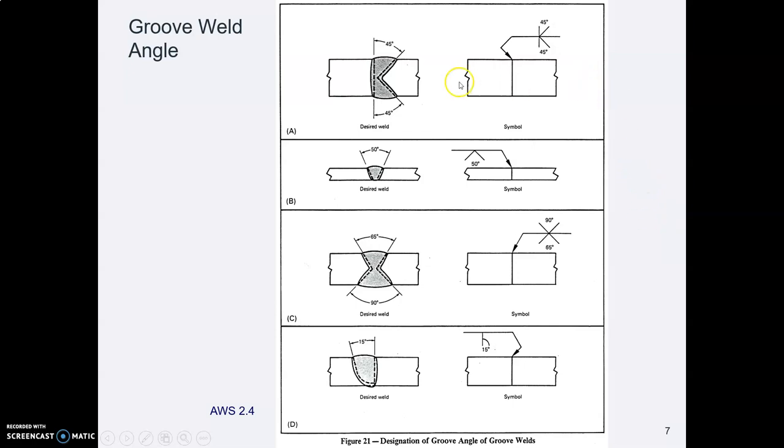Finally the angle. So the angle is in between the two plates and therefore the angle callout is in the middle of the weld symbol. Here in number B here's a V weld that has a 50 degree angle. So they've put the 50 degrees in the middle of that V callout.